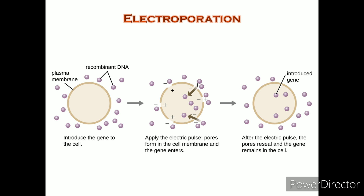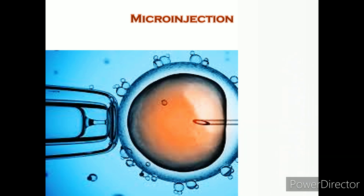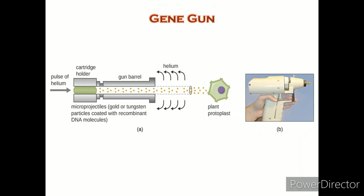Electroporation is one laboratory technique used to introduce DNA into eukaryotic cells. Microinjection is another technique, where a microinjection needle containing recombinant DNA is able to penetrate both the cell membrane and nuclear envelope. In the gene gun technique, heavy metal particles coated with recombinant DNA are shot into plant protoplasts. The resulting transformed cells are allowed to recover and can be used to generate recombinant plants.